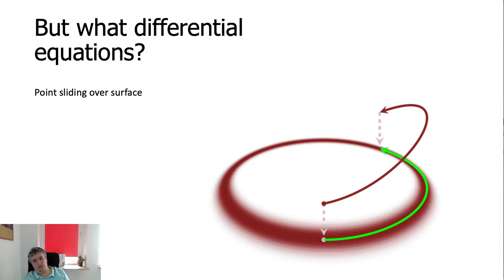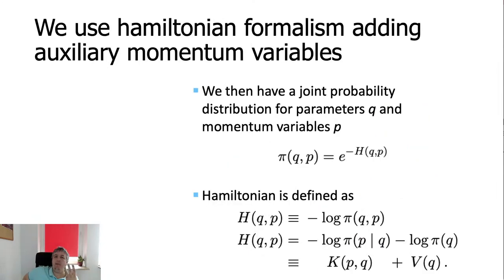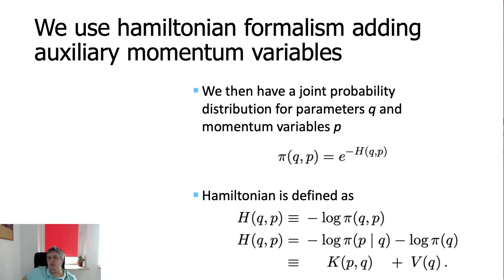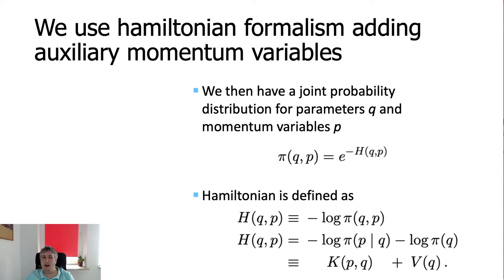This point sliding on the surface — we can create equations for it using mechanical equations consisting of velocities and momenta. For that we use the so-called Hamiltonian formalism, which adds auxiliary momentum variables. You should remember Hamiltonian formalism from mechanics courses. It is also present in physics for describing equations of motion, and can be extended, for example, to electrical values where positions and momenta become currents and voltages.